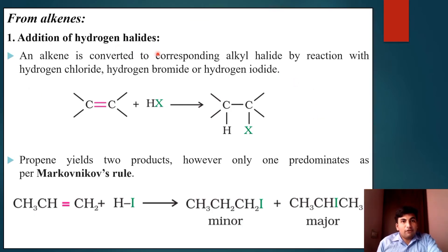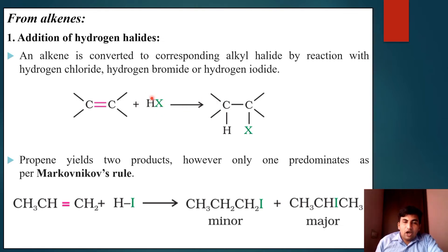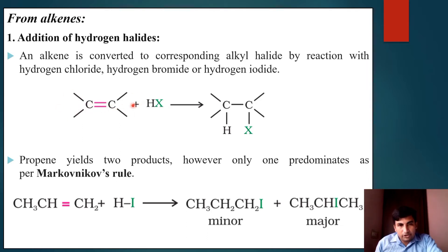From alkene — addition of hydrogen halide: the carbon-carbon double bond in alkene reacts with hydrogen halide (HCl, HBr, or HI). Hydrogen attaches to one carbon atom and X attaches to the other. For a symmetric alkene, both double-bond carbons have equal numbers of hydrogen atoms, so one hydrogen and one X group each react with one carbon of the double bond.